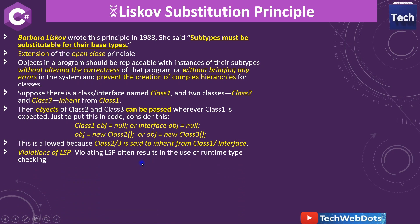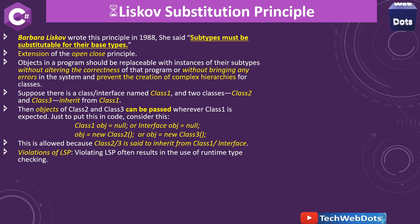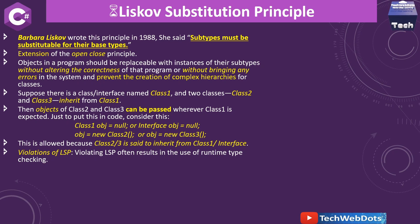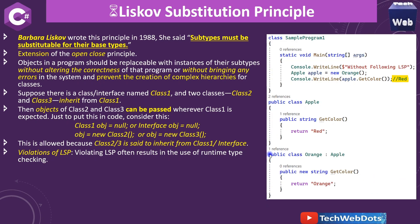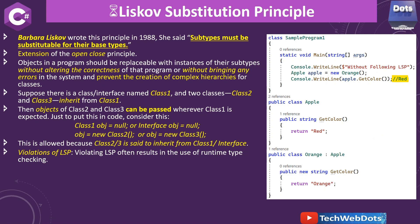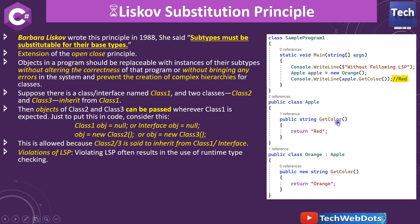Either intentionally or unintentionally we can violate the Liskov Substitution Principle. Violating LSP often results in the use of runtime type checking — at runtime we are checking what object to use and then getting the result. Let me take a very simple example that will be helpful for beginners. You can see there is a class called Apple, and in that there is a method called GetColor which returns red.